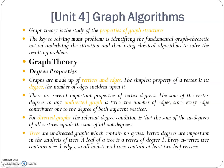For an undirected graph, the degree is nothing but the sum of the vertex degrees, which is the number of edges. Since every edge contributes to the degree of both adjacent vertices, it is the number of edges going from or coming to the adjacent vertices that gives the degree of an undirected graph.